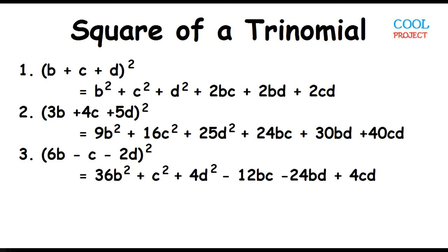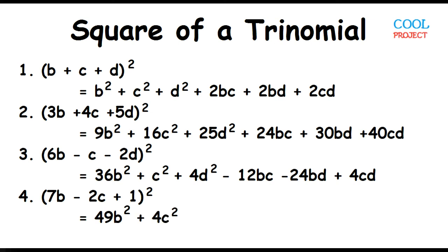Example number 4: The square of the quantity 7B minus 2C plus 1. 7B times 7B is 49B squared. Negative 2C times negative 2C is 4C squared. 1 times 1 is 1. 7B times negative 2C is negative 14BC, times 2 is negative 28BC. 7B times 1 is 7B, times 2 is 14B. Negative 2C times 1 is negative 2C, times 2 is negative 4C.